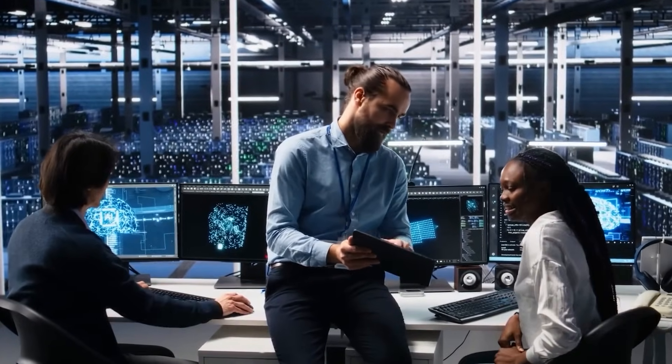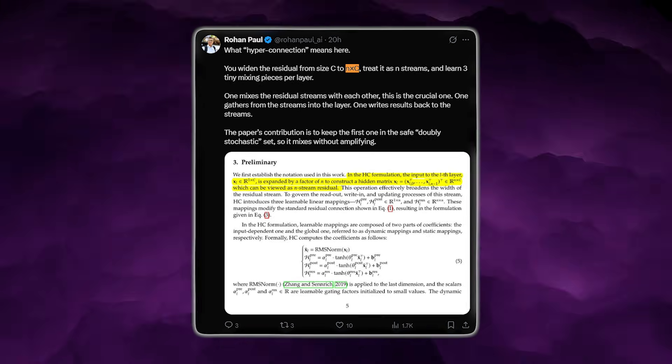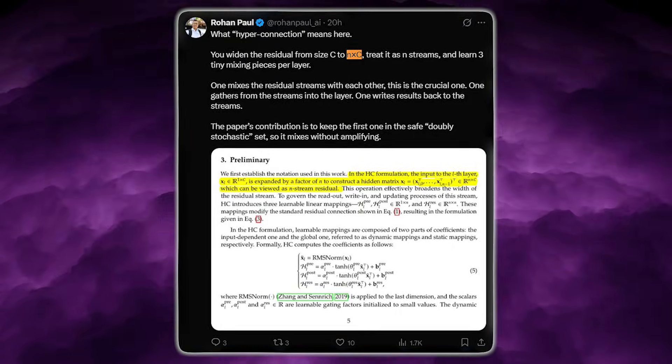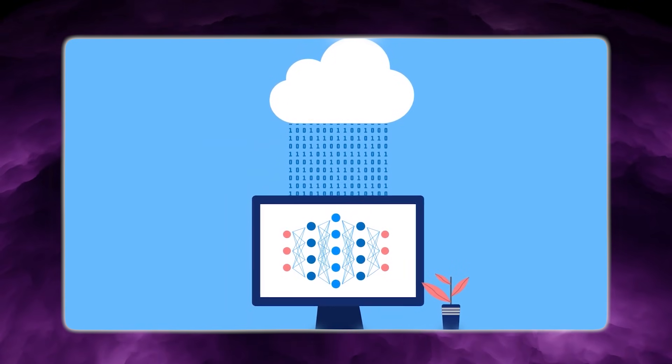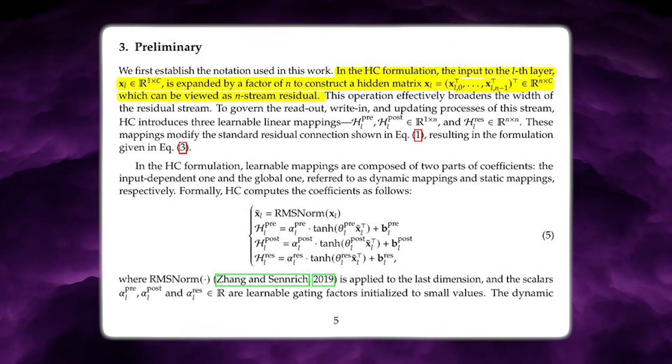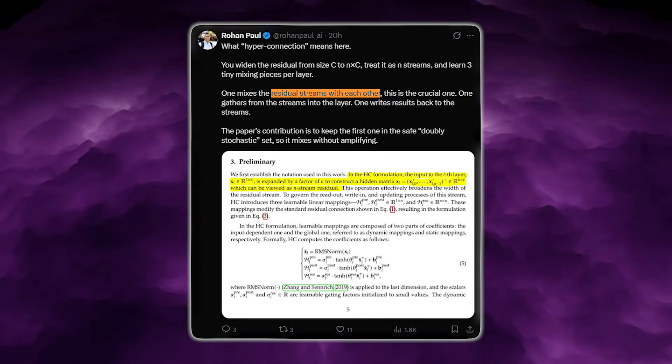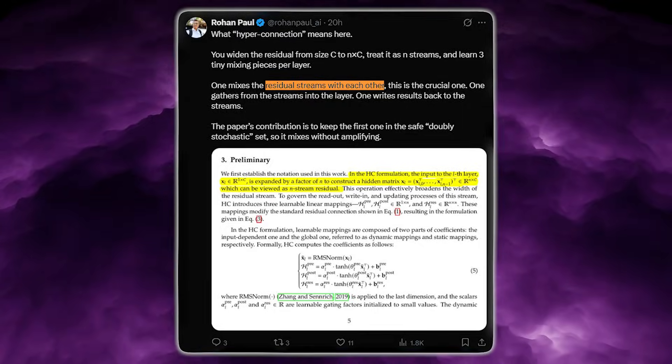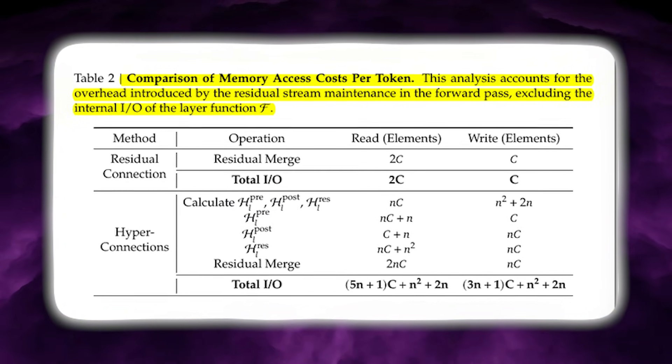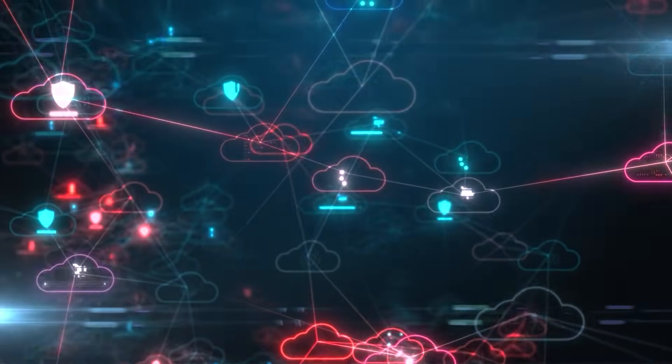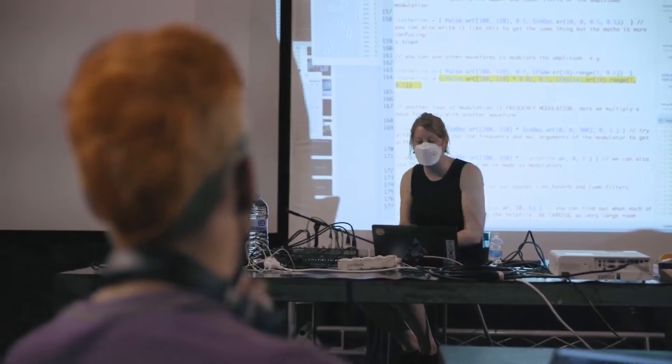The core idea starts with widening the residual stream. Instead of each layer seeing a vector of size c, MHC lets each layer see a small matrix x of size n times c, meaning n parallel residual streams, each carrying its own version of the hidden state. The update rule becomes x equals A times x plus B layer times Cx. Here, A is a small n times n matrix that mixes the residual streams with each other. B and C are n times 1 matrices that map streams into the layer and map layer results back into the streams. These matrices are tiny, so flops look cheap.